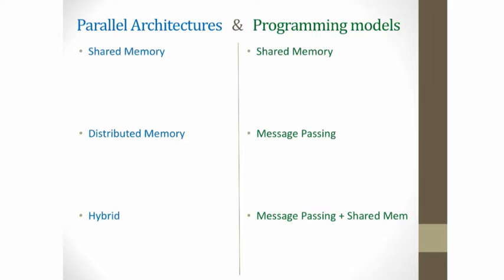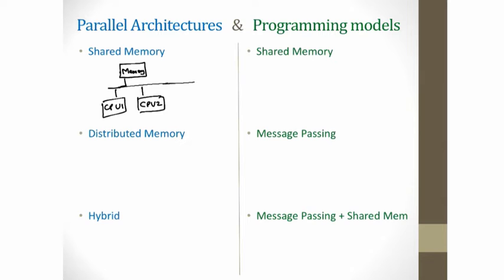I will go a little bit deeper into the parallel architectures and programming model, just give you a bird's eye view to understand what we are going to focus on in this course. If we talk about parallel architectures, there are primarily 2 architectures: shared memory and distributed memory, and then there is a third architecture which combines them both, which we call hybrid. In shared memory architectures, you have a memory unit that is accessible to multiple CPUs — CPU 1, CPU 2, CPU 3 and so on. There is a single memory unit shared by all the processors. Typically there is a common bus that sits between the memory and the processing units and all the CPUs share that bus.